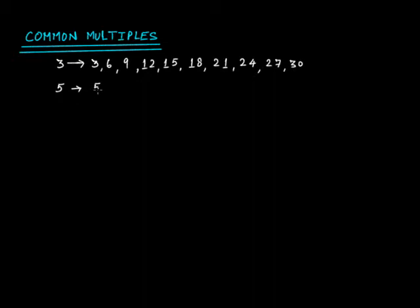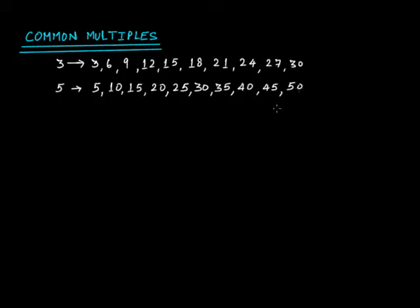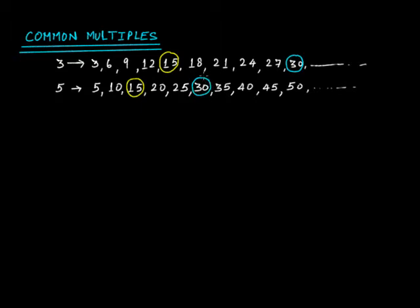Now for 5, the first ten multiples are: 5, 10, 15, 20, 25, 30, 35, 40, 45, and 50. Both of these lists will go on. Of the first ten multiples, which are common in both 3 and 5? We can see that 15 appears in both lists, and 30 appears in both lists as well.